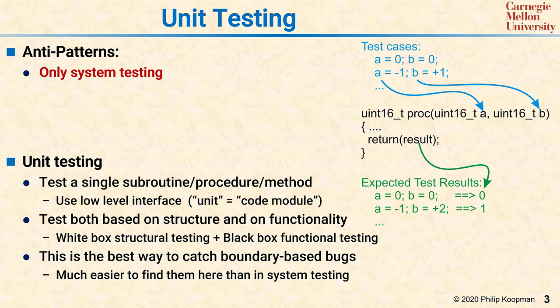Another anti-pattern is testing only happy paths. It's common to see unit tests that just confirm what the programmer expected to see, instead of really trying to delve down into all the deep dark corners of the way the code was written.